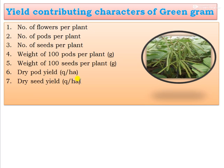The yield contributing characters of green gram include: number of flowers per plant, number of pods per plant, number of seeds per plant, weight of 100 pods per plant in grams, weight of 100 seeds per plant in grams, dry pod yield in quintals per hectare, and dry seed yield in quintals per hectare. These are the major yield contributing characters of green gram.